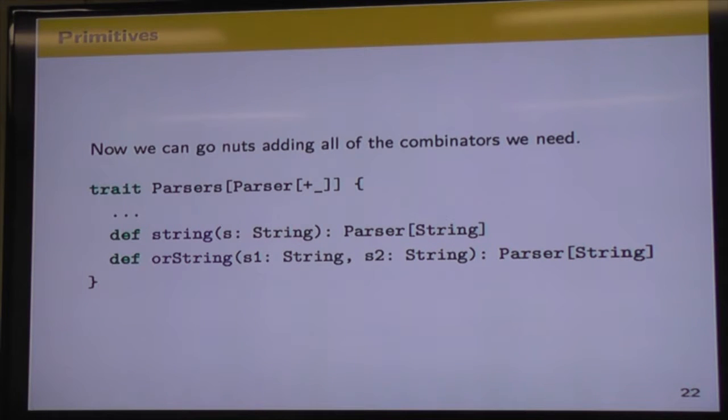Now back to our primitives. So we've got our simple trait. We've got some primitives on there. We're compiling it. Now we can go crazy and just keep adding our primitives as we think of them. So we've got a string. That's pretty primitive. We want to parse a string, fine. And we have another one that we've added there called orString. So if we have a string foo, another string bar, we want either one of those. We don't mind which. Then we can use orString.